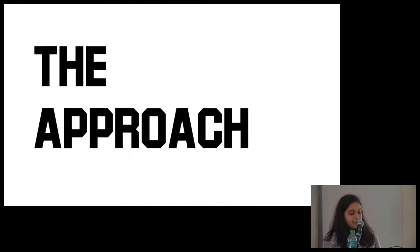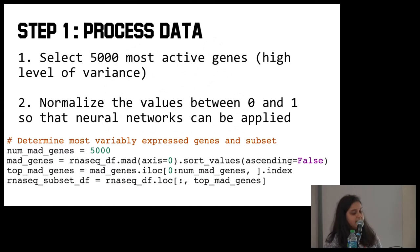So the overall approach. The first step is processing the data. It comes with a lot of columns and a lot of data that's not necessarily useful for the specific project I was working on. So getting rid of those columns, but as well as, like I said before, selecting the 5,000 most active genes. 40,000 genes, of course, is too large to try to work with. And so instead, choosing those 5,000 most active genes. The way that that's chosen is by choosing the ones that have the highest level of variance. So the ones we're going to be able to gain the most information from. The next step was normalizing the values between zero and one so that a neural network could be applied.